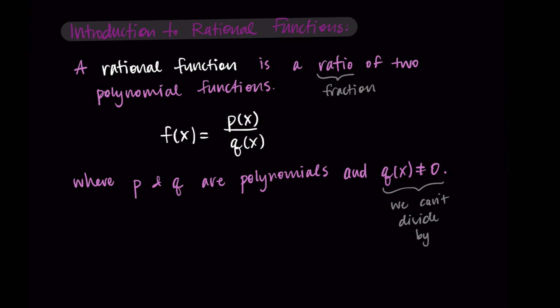In general, dividing by zero is not allowed, so we need q of x to not be zero. Since this includes a fraction, I'm going to be using the words numerator and denominator a lot. The numerator is the top of the fraction and the denominator is the bottom of the fraction. I'll use these terms as often as possible to be mathematically precise.